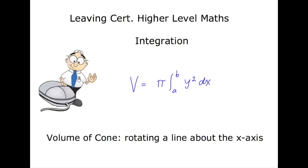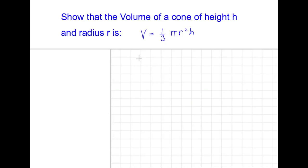The formula v equals pi times the integral between b and a of y squared dx is given in the log tables. It showed that the volume of a cone of height h and radius r is volume equals one-third pi r squared h.